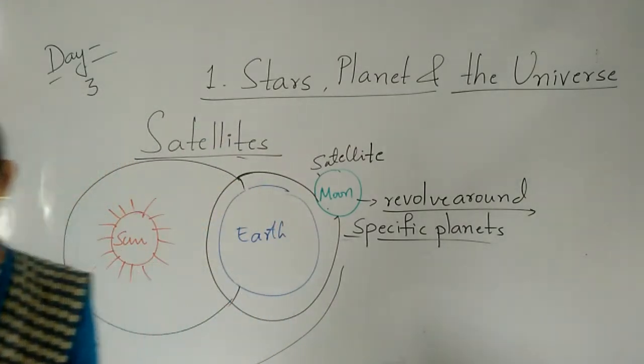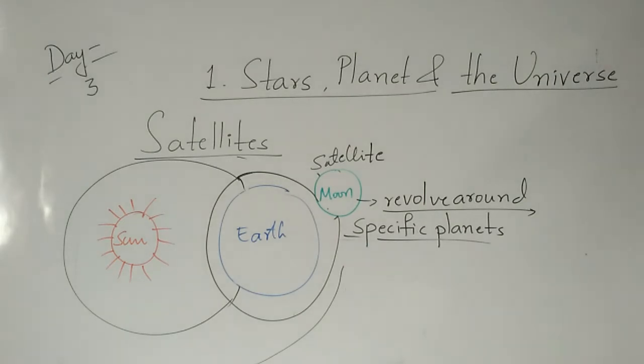Here I will show you some images. First is the sun, then earth, then moon. Moon is a satellite which revolves around the earth planet only. All the planets in the solar system, other than Mercury and Venus, have one or more satellites revolving around them. This is about the satellite.